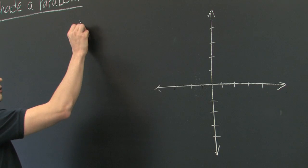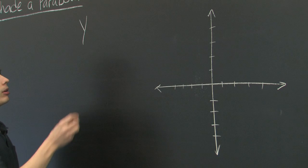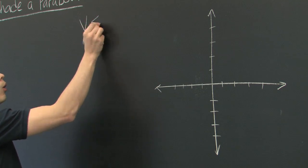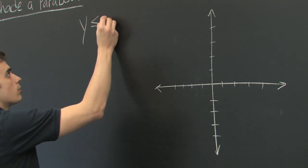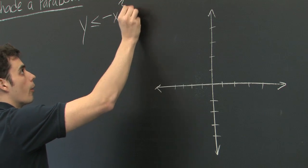So let's say that you're given an inequality involving a parabola. We'll look at y is less than or equal to negative x squared plus 4.